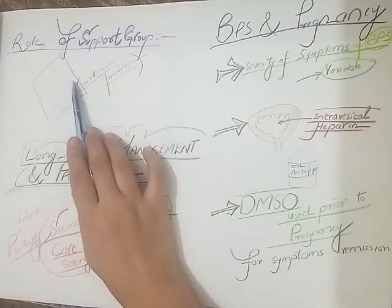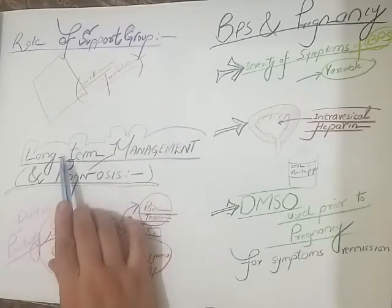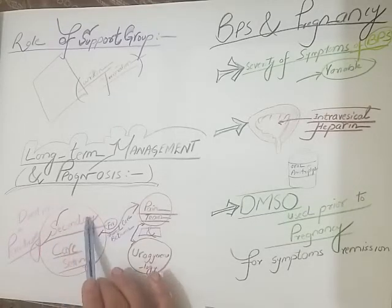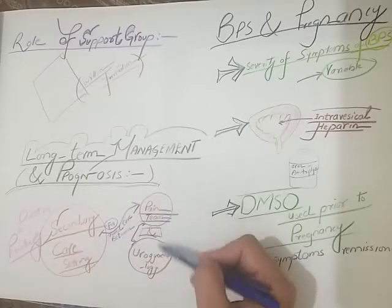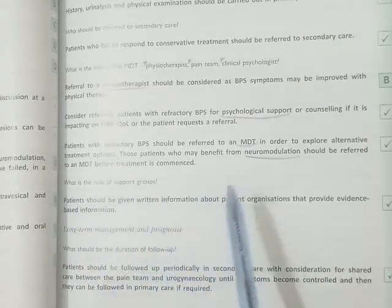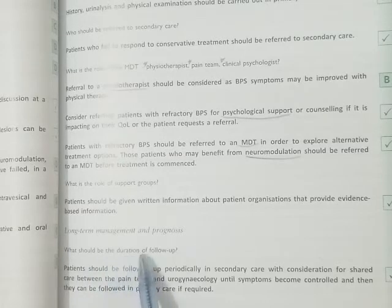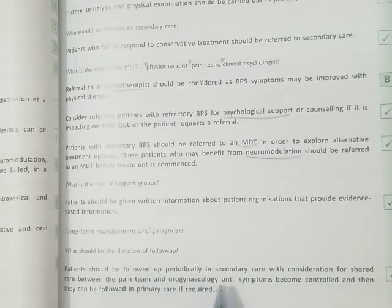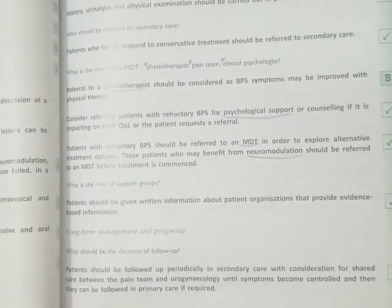Patients should be given written information about patient organizations that provide evidence-based information. For long-term management, patients should be followed up periodically in the secondary care setting, with consideration for shared care between the pain team and urogynecology, until symptoms are controlled. After that, they can be followed up in primary care if required.